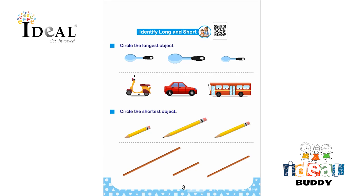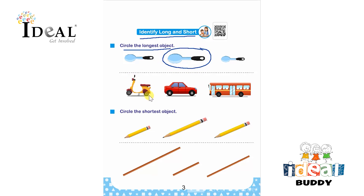Hello everyone. In this page the child has to identify the long and short. Circle the longest object. The child has to observe the given images and circle the longest object. In the second part there is a scooter, there is a car and a bus, and the bus is the longest one.